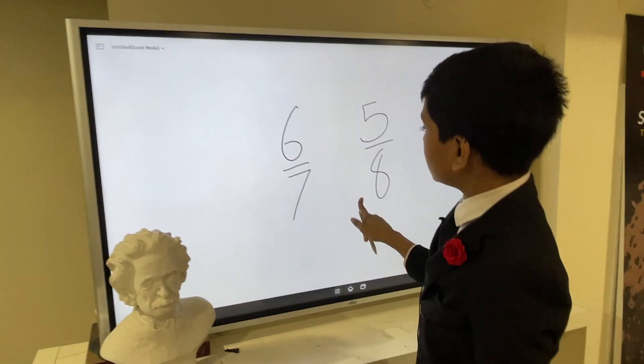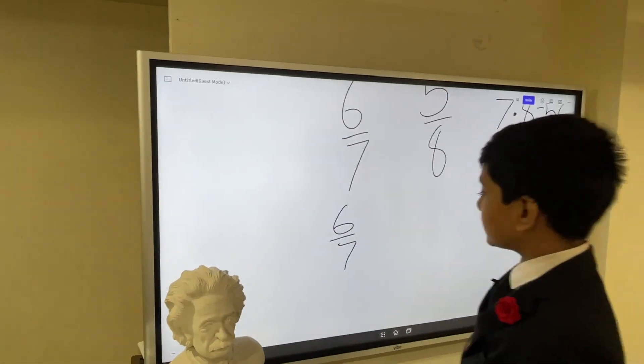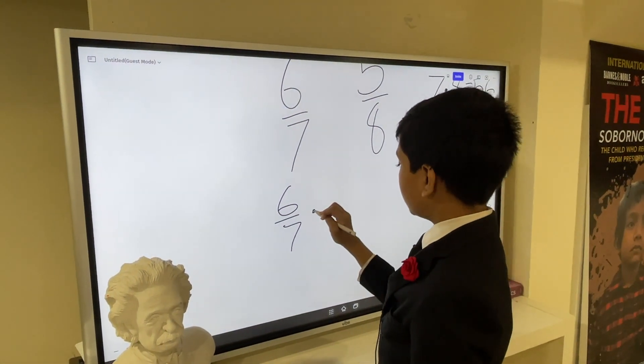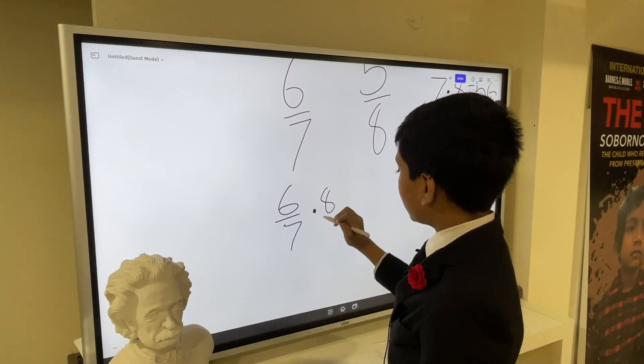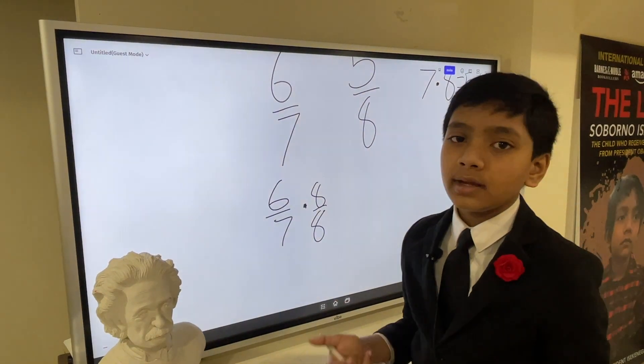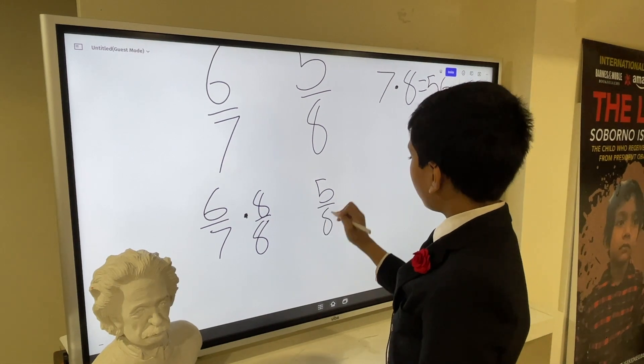So now what we can do is multiply six over seven by the trick we learned when we started learning about fractions. We can simply multiply this by eight over eight, because eight over eight is equal to one, and one has no effect on multiplication.